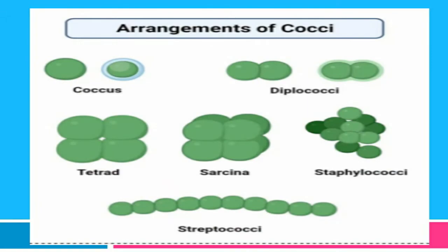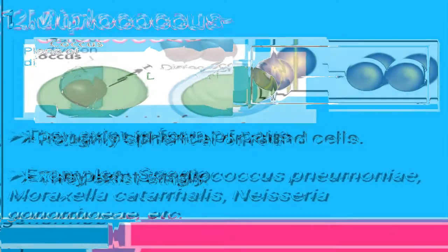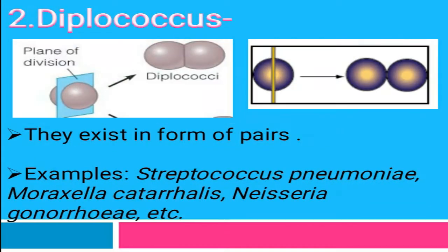The first arrangement of cocci is monococcus. In monococcus, the spherical coccus cell divides by binary fission to produce two daughter cells. If these daughter cells exist singly, they are called monococcus or coccus.